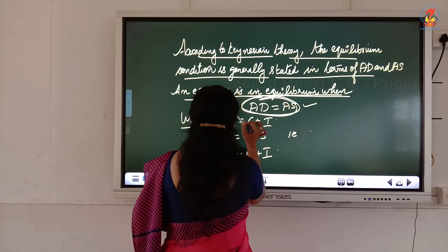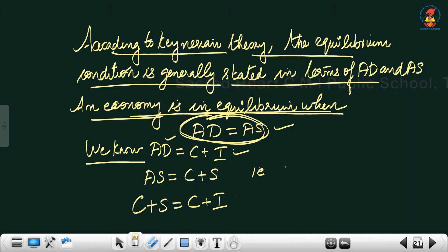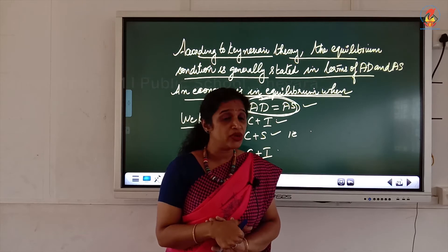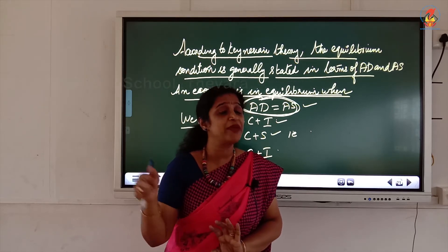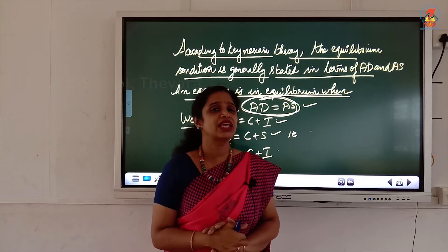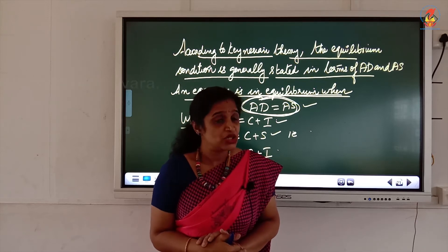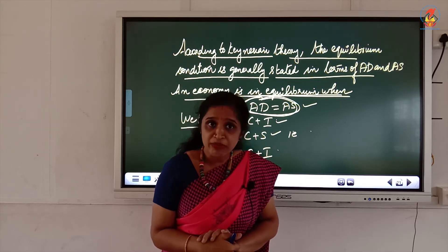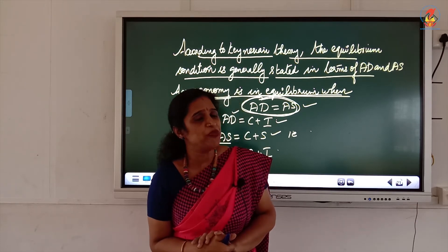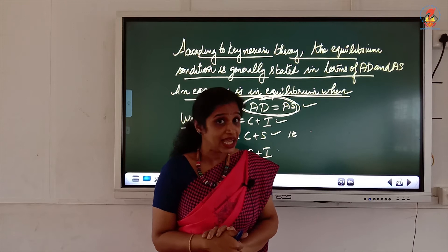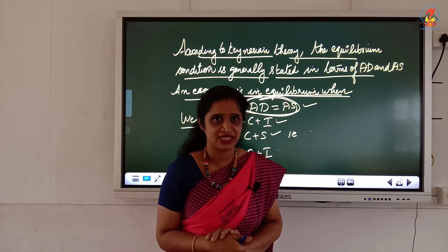In a two-sector economy, aggregate demand is C plus I, and aggregate supply is C plus S. Keynes limited his model to two sectors — firms and households — making AD equal to C plus I, and AS equal to C plus S. Income is used for both consumption and saving, and AS equals Y.